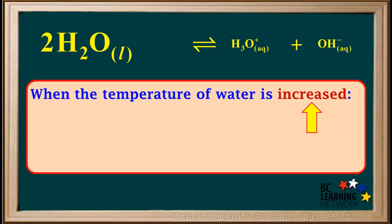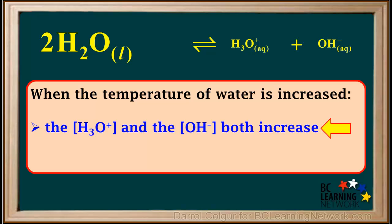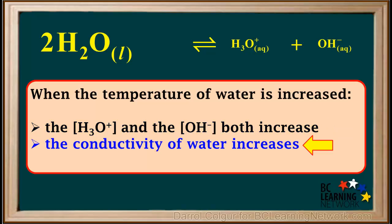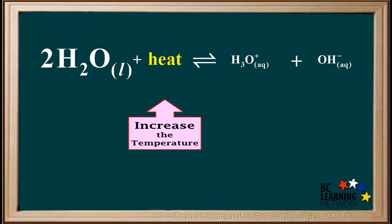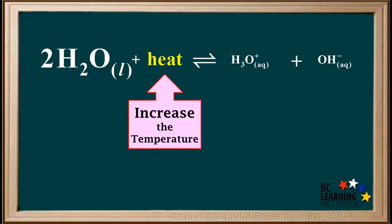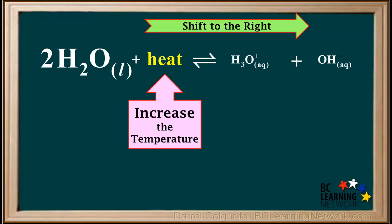So we can summarize by saying that when the temperature of water is increased, the concentration of hydronium and the concentration of hydroxide both increase, and the conductivity of water increases. This can all be explained if we realize that the ionization of water is endothermic. The heat term can be written on the left side of the ionization equation. Increasing the temperature adds heat to this equilibrium system, and according to Le Chatelier's principle, the equilibrium will counteract the addition of heat by shifting to the right.